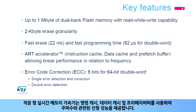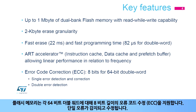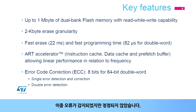The adaptive real-time memory accelerator, with an instruction cache, a data cache, and a pre-fetch buffer, allows linear performance in relation to frequency. The flash memory supports error code correction, or ECC, which is 8 bits long for each 64-bit double word. A single error is detected and corrected. A double error is detected, but not corrected.